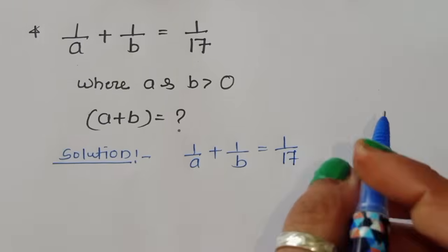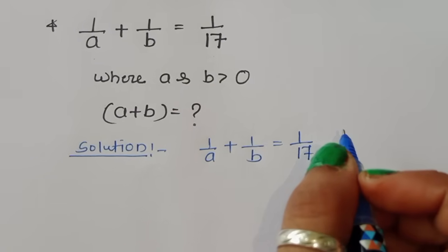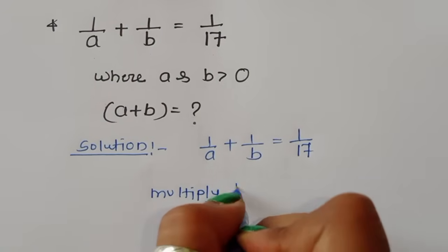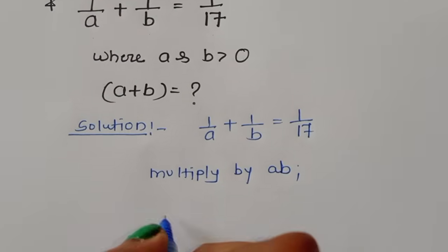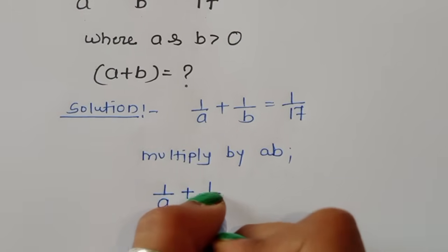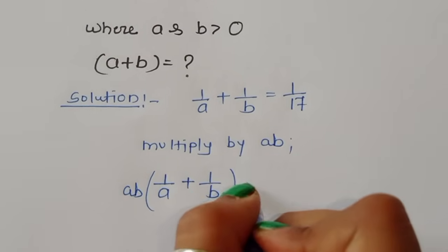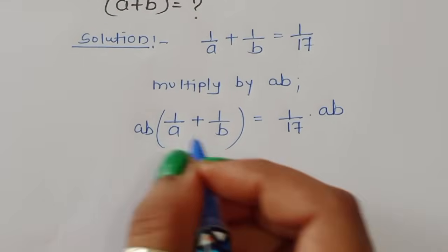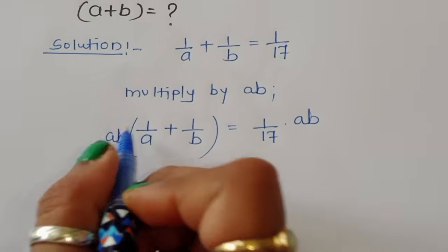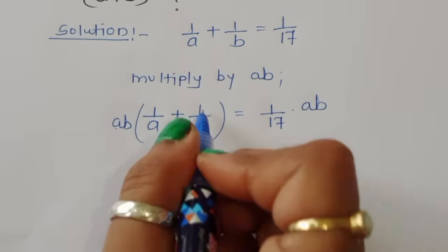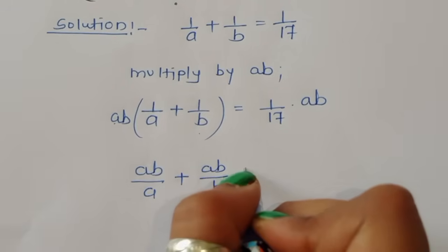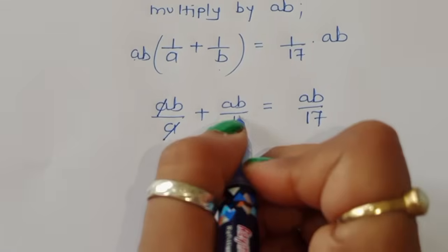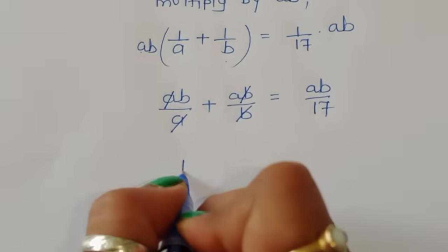We have 1/a + 1/b = 1/17 as the given equation. We can multiply both sides by ab. So multiplying by ab: (1/a + 1/b) × ab = (1/17) × ab, which gives us ab/a + ab/b = ab/17.